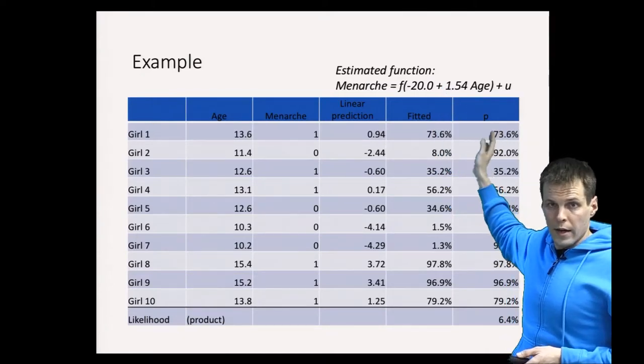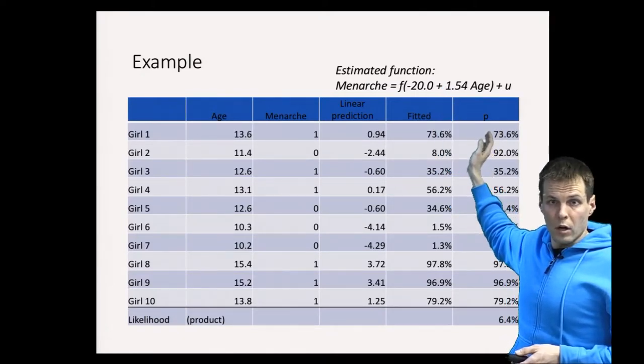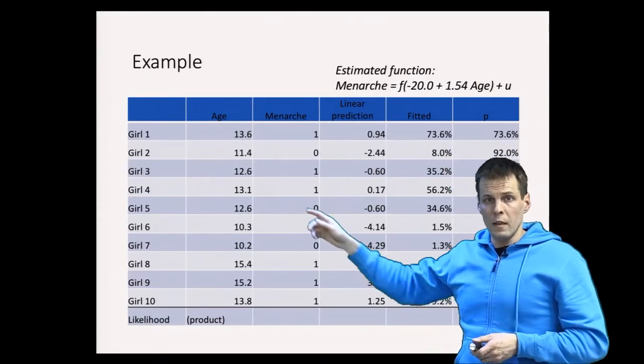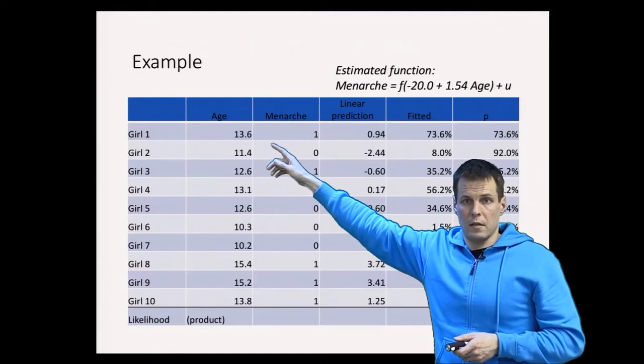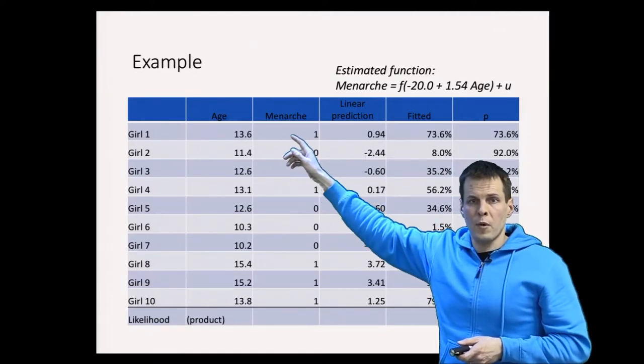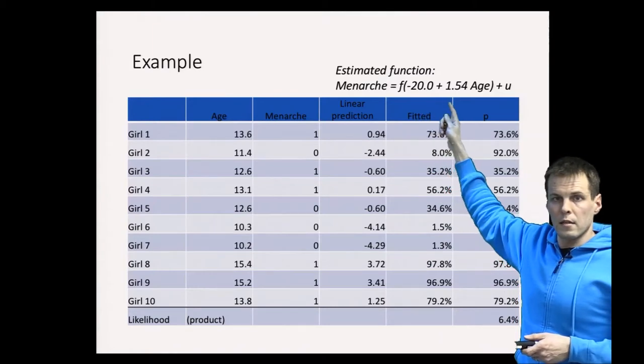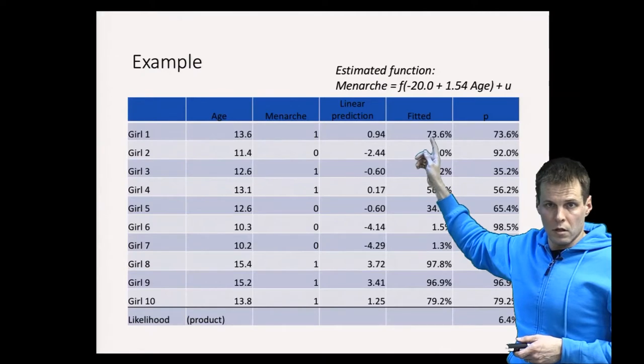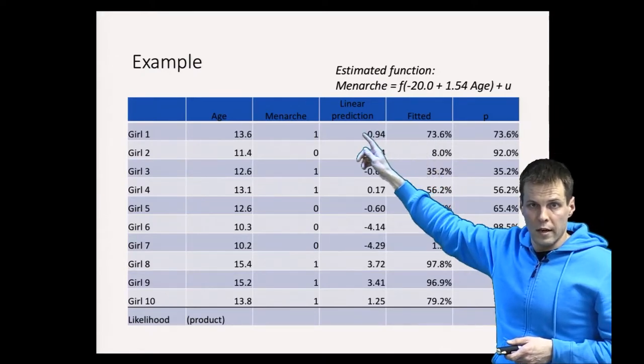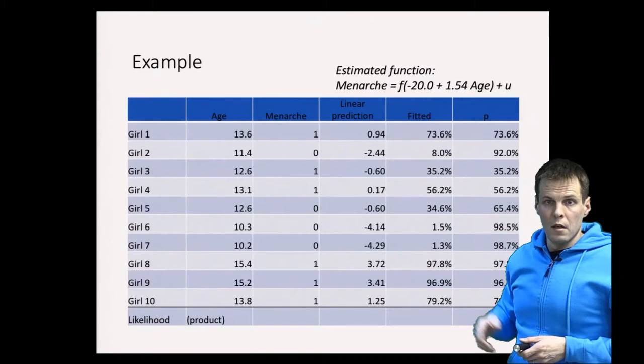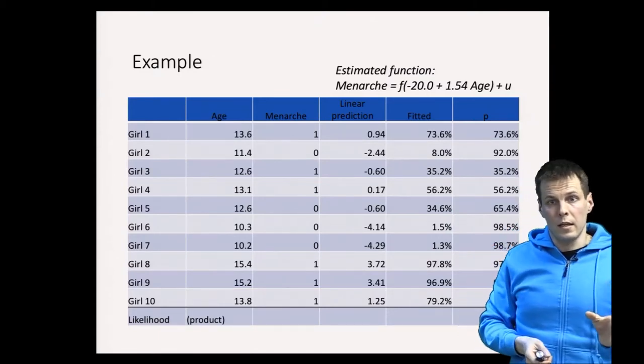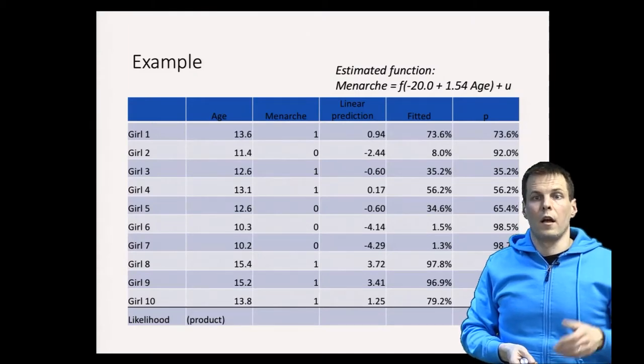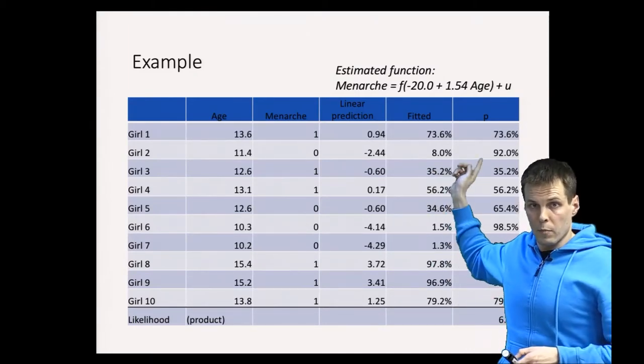Then we check how likely that particular observation is given the fitted probability. For example, the first girl is 13.6 years and she has had menarche. The linear prediction for that girl using this equation is 0.94. The fitted probability using the logistic function applied to this linear prediction is 73.6 percent. If the probability is 73.6 percent and the girl has had menarche, then the likelihood for that observation is 73.6 percent.